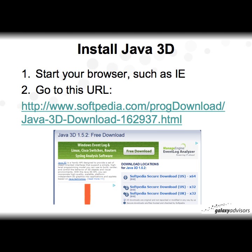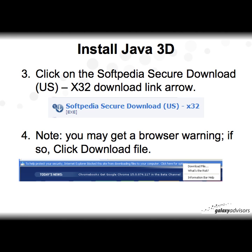Start your browser, such as Internet Explorer, and go to the URL listed here. Once you do that, you'll have a page rendered that talks about Java 3D 1.5.2 for a free download. Click on the Microsoft PDF Secure Download for the X32 download link. There is also a 64-bit option if your machine is 64-bit.